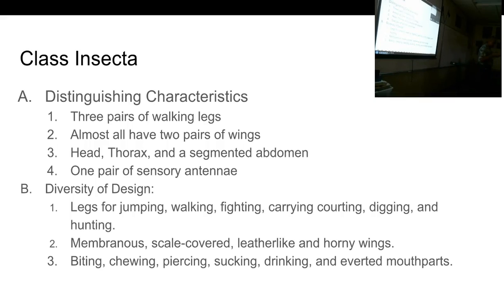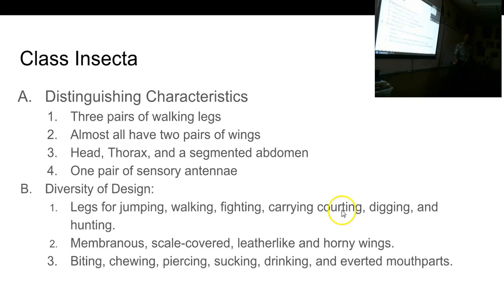Flies have everted mouth parts. When a common house fly lands, you'll see a black thing go down out of its mouth and flatten on the ground — every time a fly lands, it tries to eat. That black thing is actually its stomach. Flies put their stomach on top of their food, and it just absorbs through the stomach wall. It's called an everted mouth part.